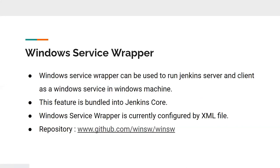Now let's move into Windows Service Wrapper. Windows Service Wrapper is a tool which we can use to run Jenkins as a service on Windows machines. This feature is actually bundled into the Jenkins core itself and we have to provide a lot of configurations into Windows Service Wrapper. At the initial state of this project, before we started, we would configure Windows Service Wrapper by an XML configuration file.